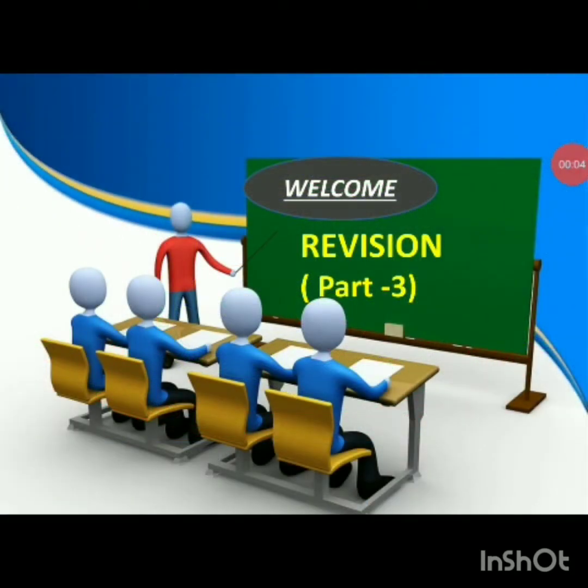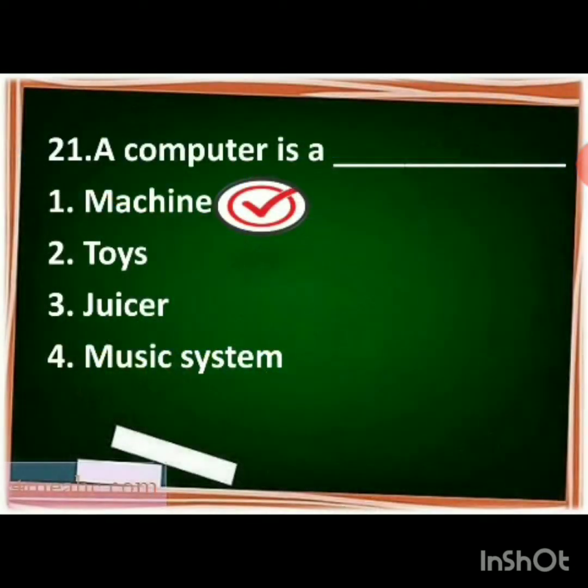Good morning children, welcome back to the computer class. Let's continue our revision. Choose the correct option: a computer is a dash. The options are machine, toys, user, music, system. The correct answer is machine. A computer is a machine. You have to make the tick mark for machine.